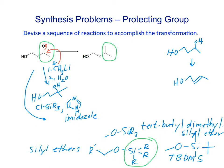We're going around the first reaction — we protect first, then do the organolithium reaction. To be clear, the unprotected route would not actually work because the organolithium would just pull off the proton on the alcohol via an acid-base reaction.